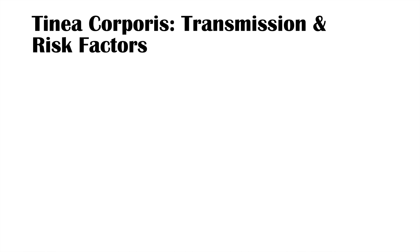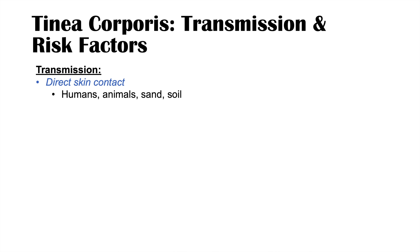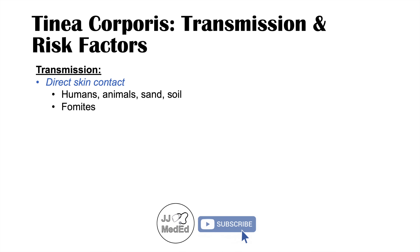Transmission of tinea corporis involves direct skin contact — either skin-to-skin contact with an affected human, from an animal, or from sand or soil. If fungi are present in sand or soil and you contact your skin with it, you can pick up the fungi and develop an infection. You can also have direct skin contact with fomites — indirect objects like furniture — and technically pick up that fungi.